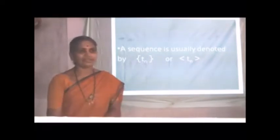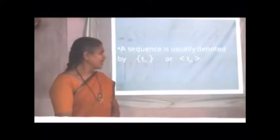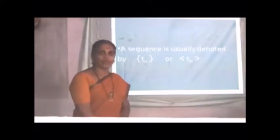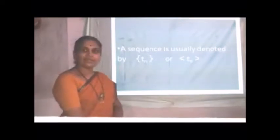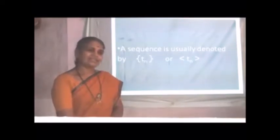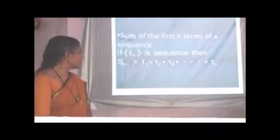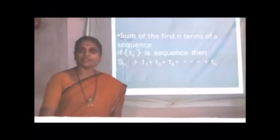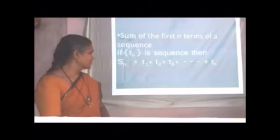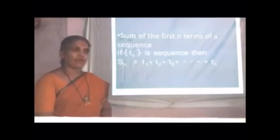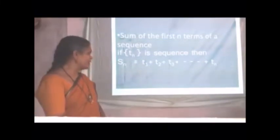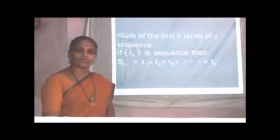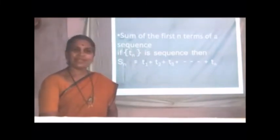Nth term of sequence is denoted by Tn. And sequence is usually denoted, as shown on board. In comma, Tn is written as sequence. Symbolically, we write sequence. Sum of first n terms of sequence. If Tn is given, first n terms of sequence are given. Then sum of n terms, that is Sn, is calculated as T1 plus T2 plus T3, up to plus Tn.